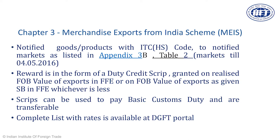The MEIS rates are currently in the range of 2% to 20%, with rates at 2, 3, 4, 5, 7, 10, and 20 percent. The benefits under MEIS are given in the form of a duty credit scrip. Once issued, the duty credit scrip can be used by the exporter to pay basic customs duty for importing all kinds of items — the basic customs duty applicable can be debited by debiting those duty credit scrips. These scrips are also transferable, so a person who owns a scrip can transfer it to another exporter.